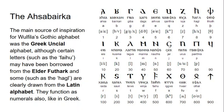The alphabet Wulfila produced is called the Achseberka. The main source of inspiration was the Greek uncial alphabet, although certain letters — such as the fehu rune — appear to have been borrowed from the Elder Futhark, and the letter H is quite obviously drawn from the Latin alphabet. So at least three alphabets influenced Wulfila in the creation of this script.